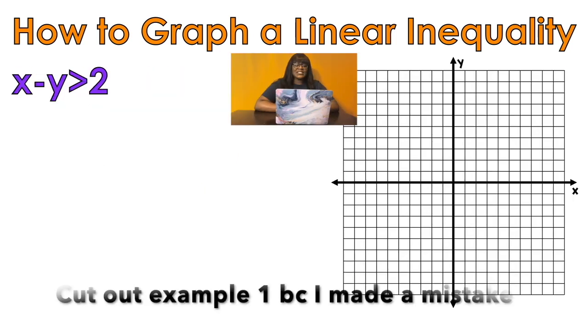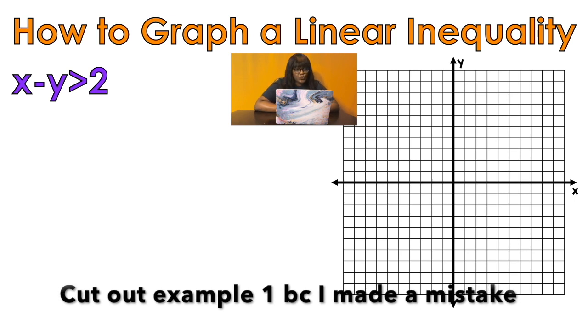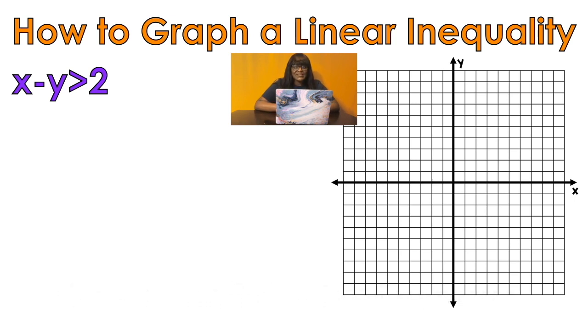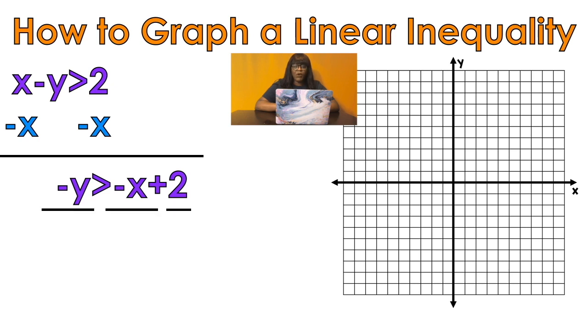Example number two, x minus y is greater than two. I need to get y by itself. Minus x on both sides. Negative y is greater than negative x plus two. Divide everything by what's in front of y. A lot of times my students forget this. There is a negative in front of the y, so I'm gonna divide everything by negative one. When you divide by a negative and you are doing inequalities, what do you need to do? Flip that symbol baby.